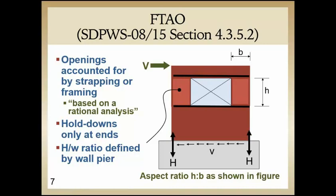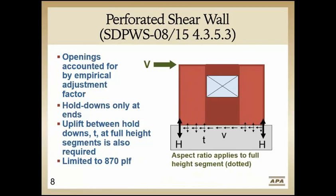It's in situations where the height-to-width ratio will not work for that full plate-to-plate height. Going to the perforated approach, in this instance we're looking at it as a single shear wall, so you have only hold-downs at either end, with attachment at the base of the wall at the full height segments. We have eliminated the strapping requirement — given this method was based on testing, strapping was not required for the tension transfer above and below the window. However, the height-to-width ratio is measured the same as for segmented — based on the total height of the wall. So if you can't meet the height-to-width ratio going plate to plate, you likely won't be able to use the perforated shear wall approach either. You'll have to go to the FTAO.